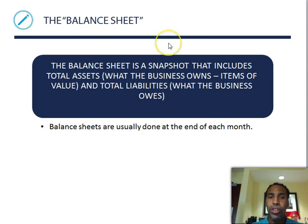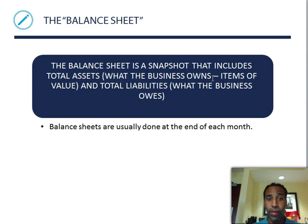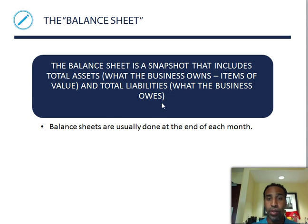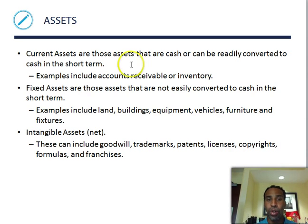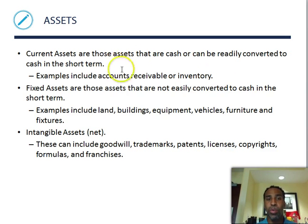The balance sheet is a snapshot that includes total assets — what the business owns, items of value — and total liabilities — what the business owes. Balance sheets are usually done at the end of each month. Current assets are cash or items that can be readily converted into cash in the short term; examples include accounts receivable and inventory. Accounts receivable means another company owes you money; inventory — such as cars on a lot — is counted as an asset because it can easily be turned into cash.